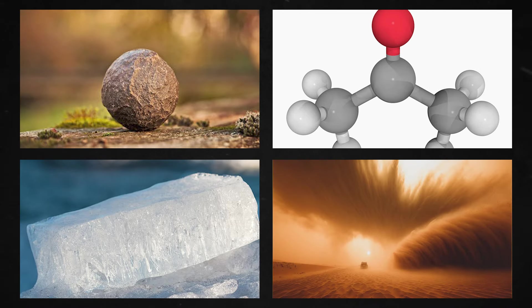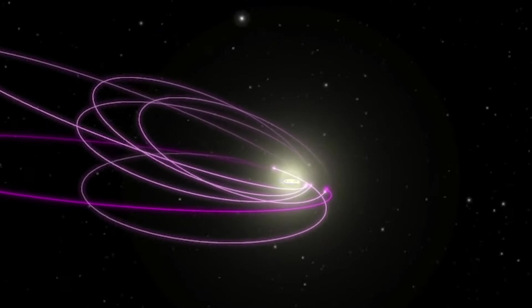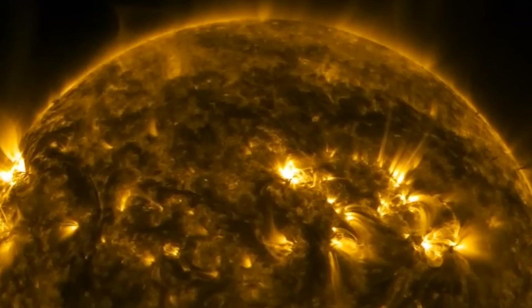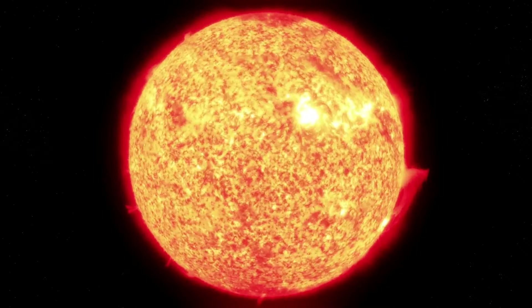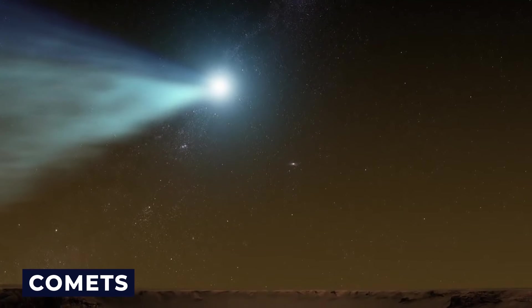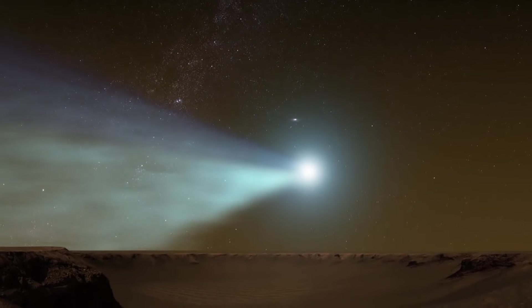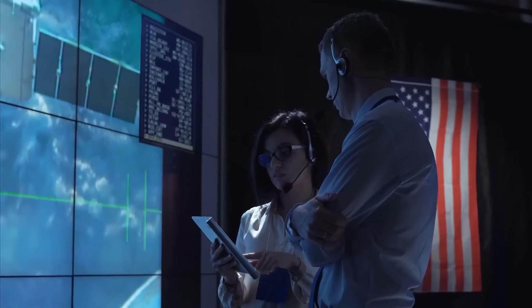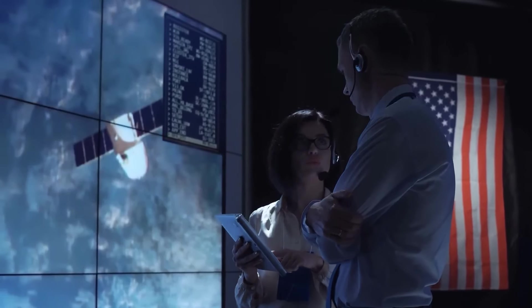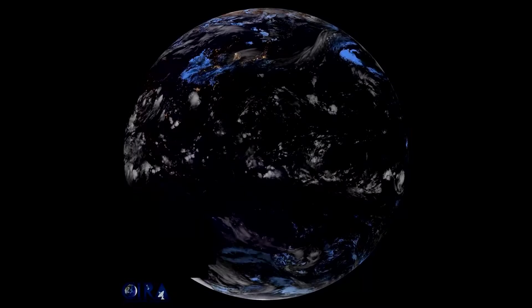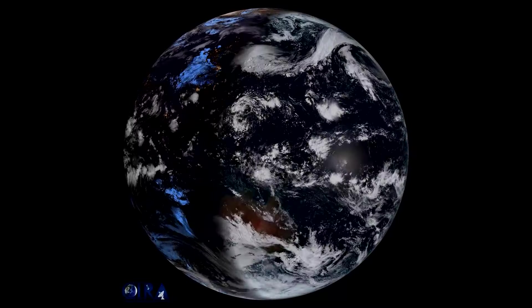Comets are celestial objects primarily composed of ice, dust, rock and organic compounds. They possess highly elliptical orbits that take them from the distant reaches of the solar system to closer proximity to the sun. When heated by the sun's radiation, comets develop a glowing tail made of gas and dust, creating a spectacular display visible from Earth. Scientists believe that comets are remnants from the early solar system, carrying preserved materials from that time and providing valuable insights into its formation.